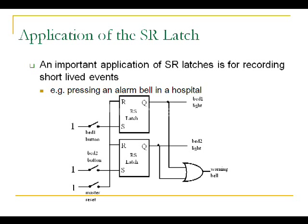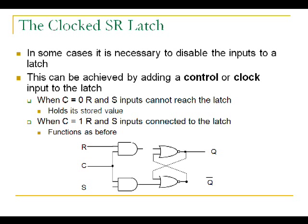Now let us see the clocked SR latch. Up to now we have seen the SR latch which produces output at any point when the input changes. But to control the output only during certain situations, we add a control input. This circuit connects the basic SR latch to two AND gates receiving R and S inputs along with a clock or control input. When C equals 0, one input to the AND gate is 0, so the output remains 0 and the circuit maintains the same state.